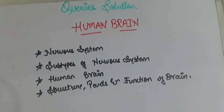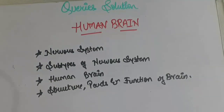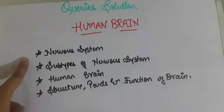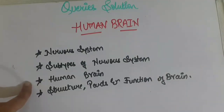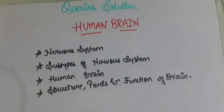Hello everybody and welcome back to my channel Query Solution. Today we are going to start a new topic which is the human brain. In this topic I'll be covering what is the nervous system, the different subtypes of nervous system, the basic parts of the human brain, the structural details, and the functions of different parts of the brain. Do watch my video completely, and let us start.